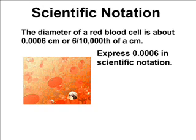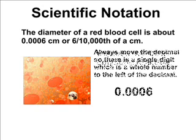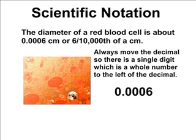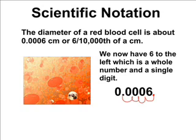Now we have to do the same step as we did with the larger number — move the decimal so that it is in a position where the number directly before the decimal is a single digit and a whole number. In this case, if we take the decimal and move it to the left, that would not make sense because there would never be a digit in front of the decimal which is a whole number. So in this case, we have to move the decimal to the right, all the way behind the six. If we move the decimal after the six, the number in front of the decimal is a single digit and a whole number — in this case, the number six.